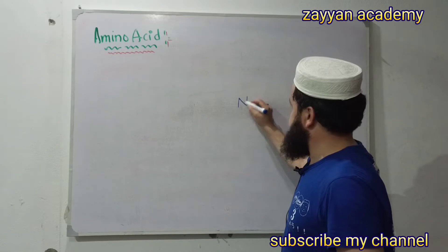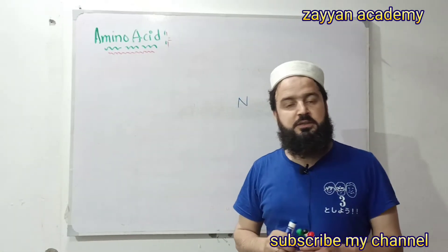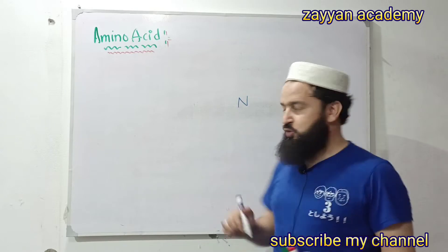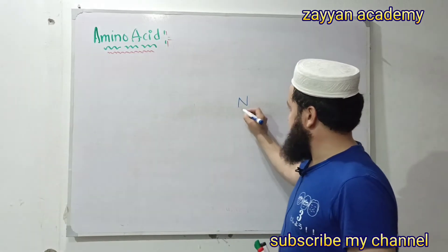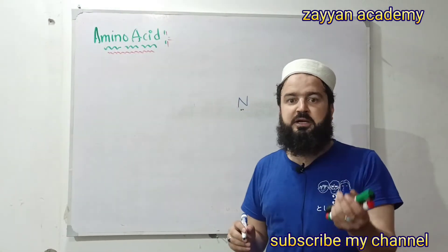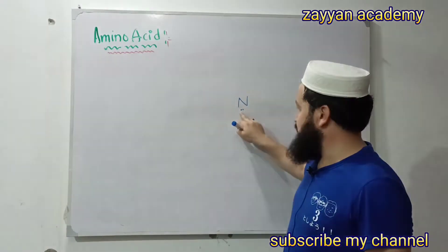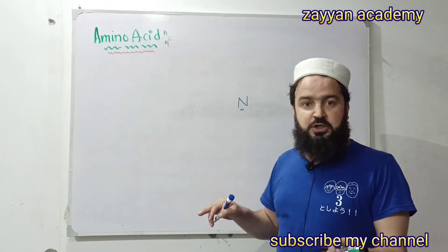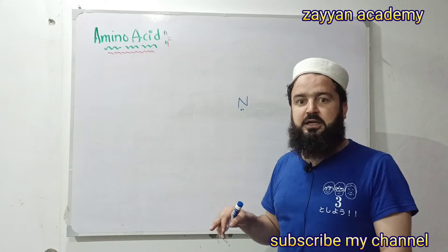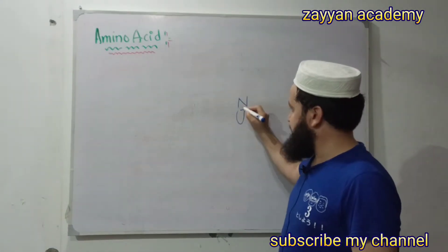Nitrogen has a lone pair of electrons. We have two lone pairs of electrons. There are two pairs of electrons. When those who don't know one of the people see this, there is no lone pair.